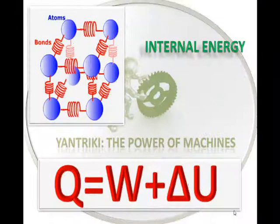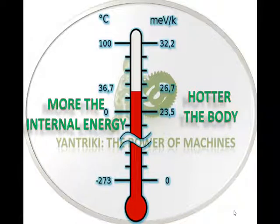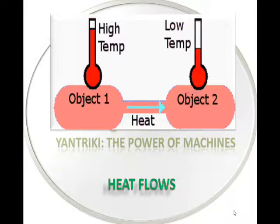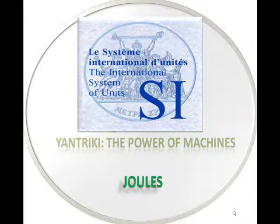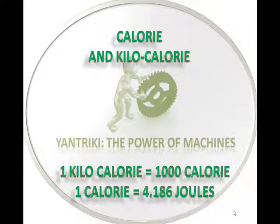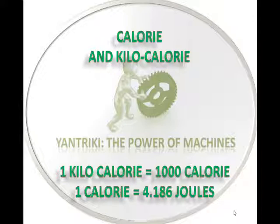Heat energy is the internal energy of these molecules. More the internal energy, hotter will be the body. We can define heat as a form of energy that flows. The SI unit of heat is Joule and the CGS unit is ERG. Calorie and Kilocalorie are also units of heat. 1 Kilocalorie equals 1000 calories, and 1 calorie equals 4.186 Joules.